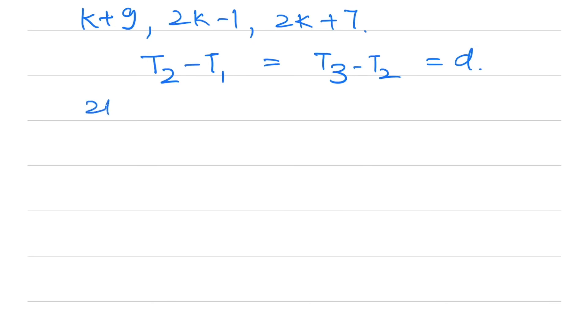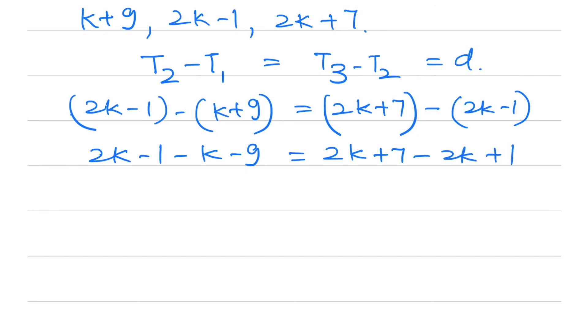So (2k-1) - (k+9) = (2k+7) - (2k-1). This gives us 2k - 1 - k - 9 = 2k + 7 - 2k + 1. The 2k terms cancel, so k - 10 = 8. Therefore, k = 18.